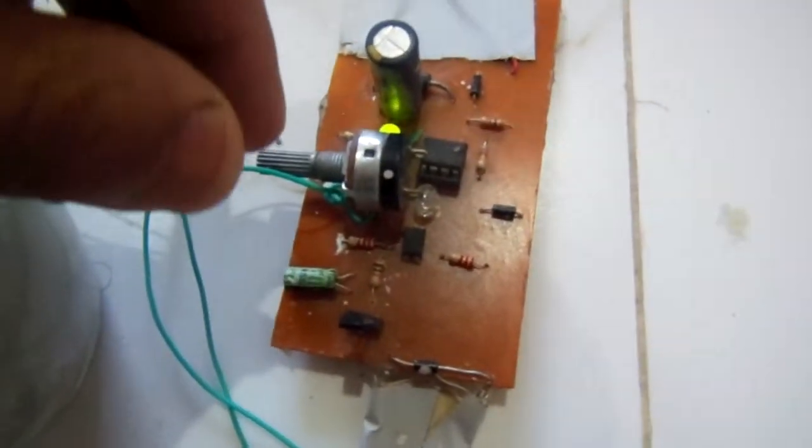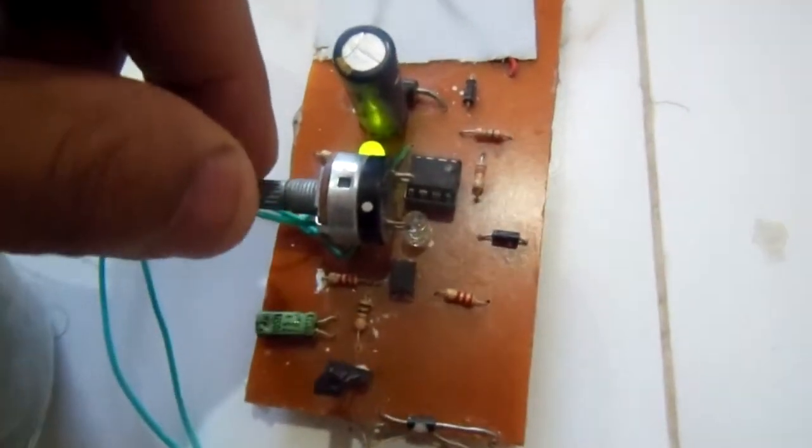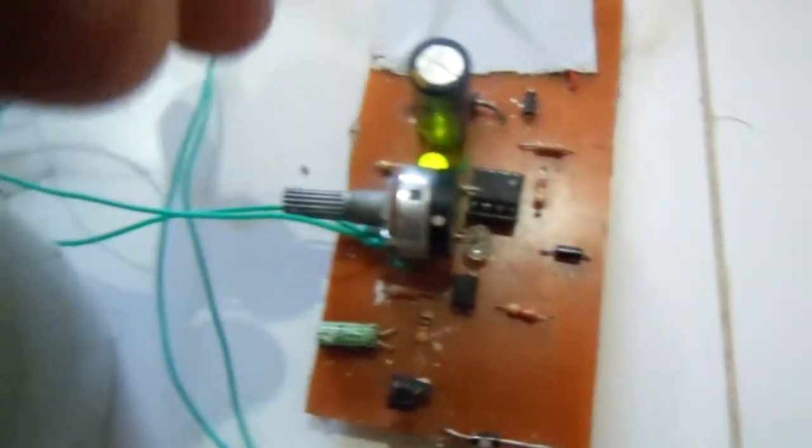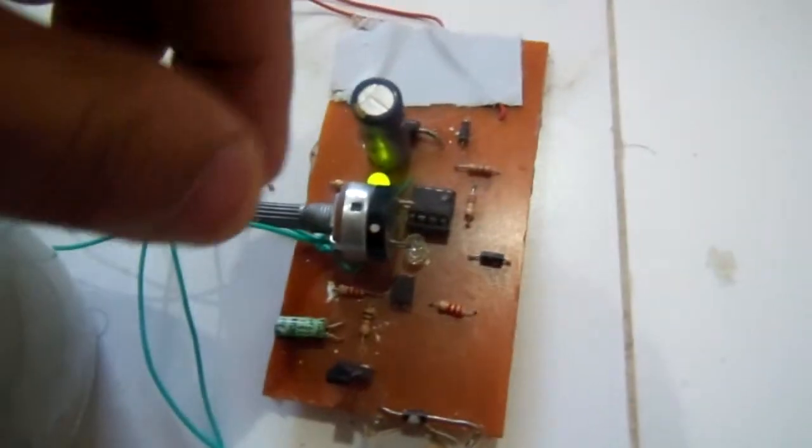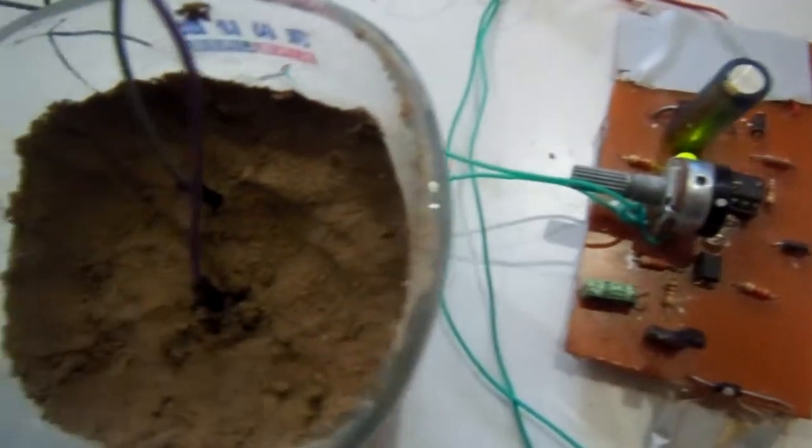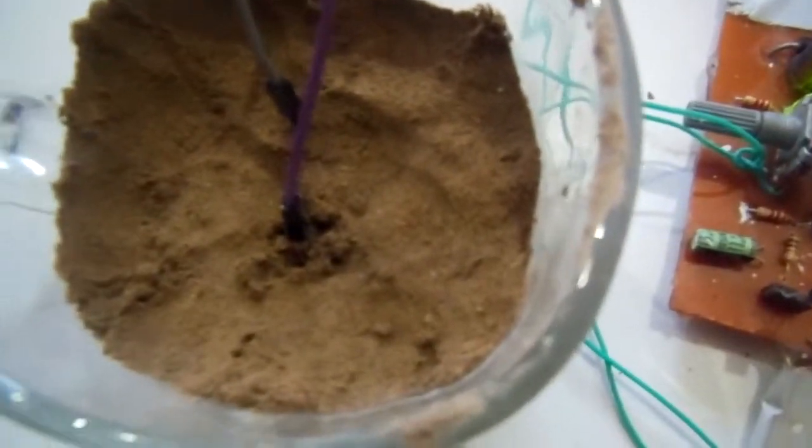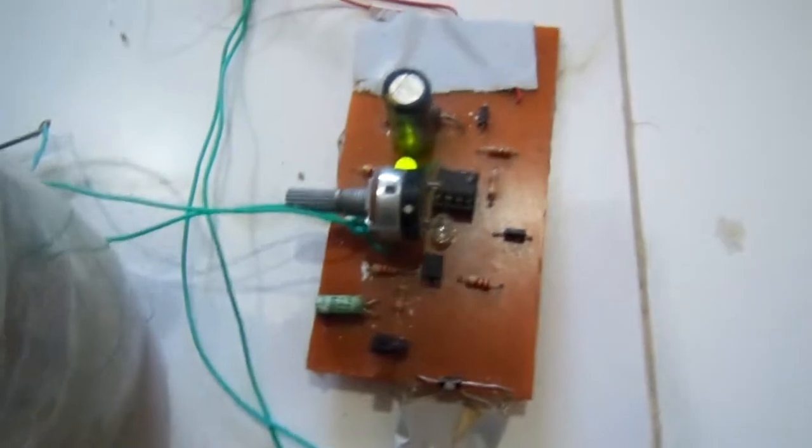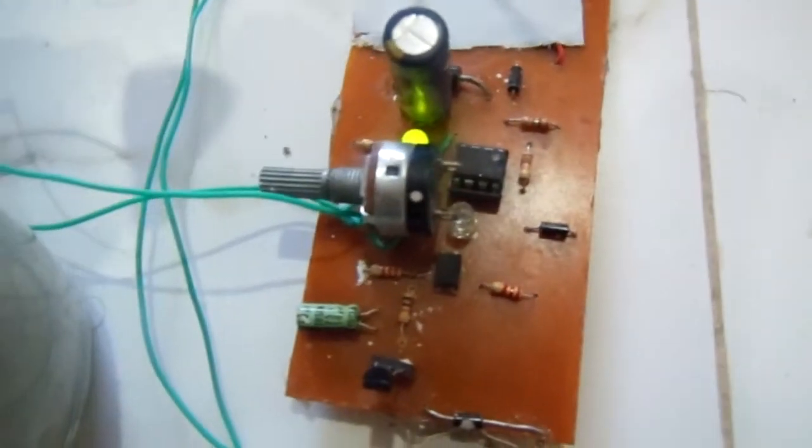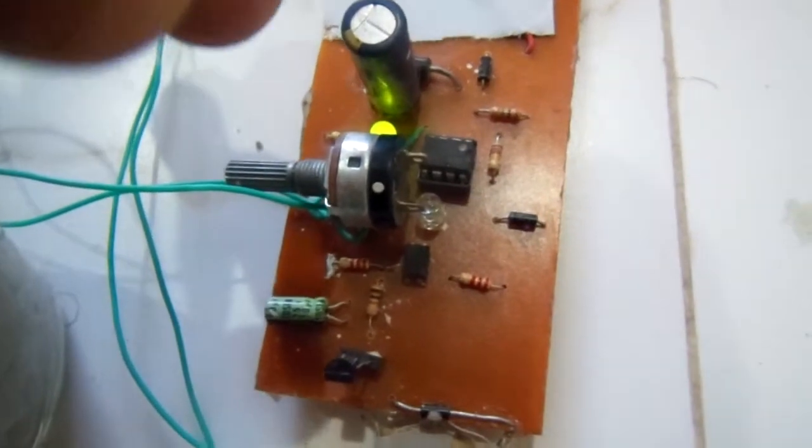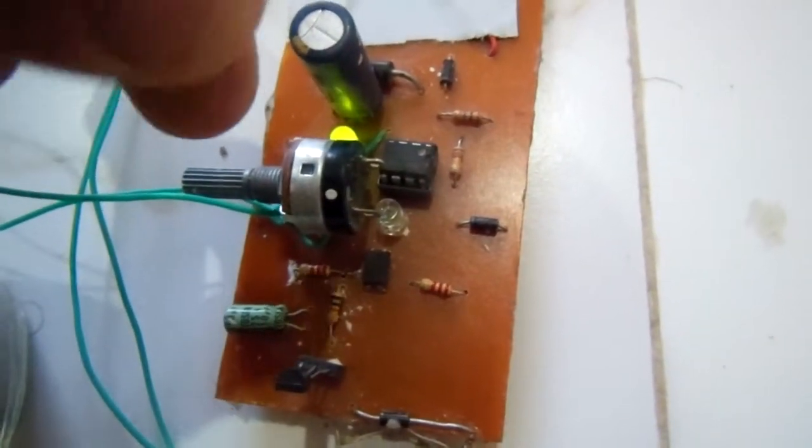This potentiometer is for adjustment. You can adjust this potentiometer to any level of moisture. You can adjust at which level of moisture you want to water your plants. So it is an adjustable automatic plant watering system.